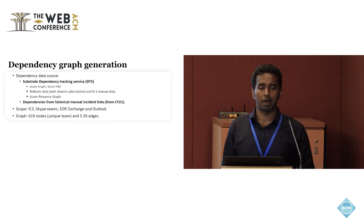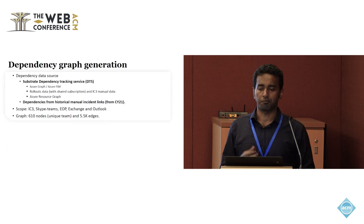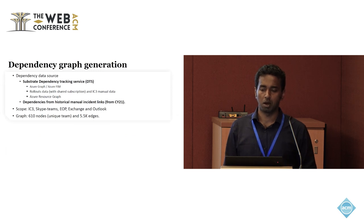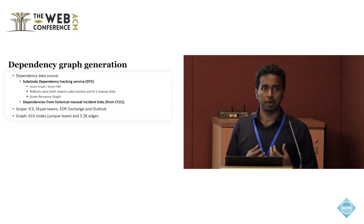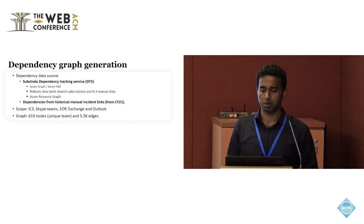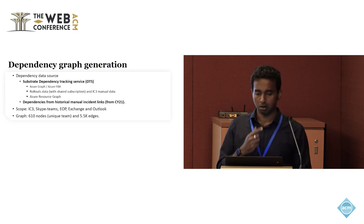To generate the dependency graph, we considered five major workloads from Microsoft, giving us around 610 unique services. We first generated a partial dependency graph by leveraging our internal data from a dependency tracking tool that uses Azure graphs, shared subscription information, and DNS calls. We then augmented that dependency graph with historically manually linked incidents, giving us a total of around 5,500 edges in the global dependency graph.